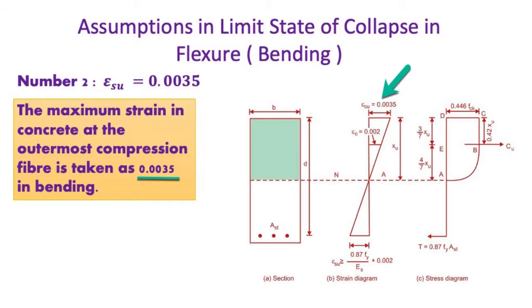Number 2 assumption: The maximum strain in concrete at the outermost compression fiber is taken as 0.0035 in bending.